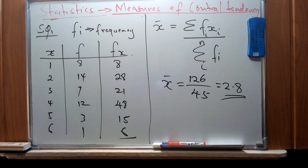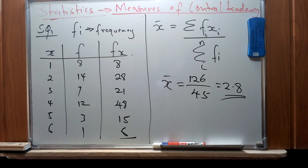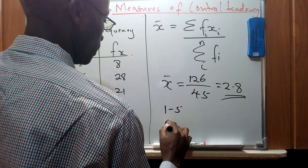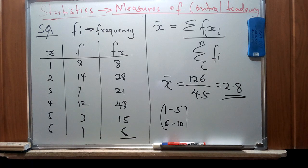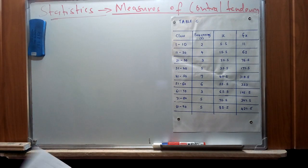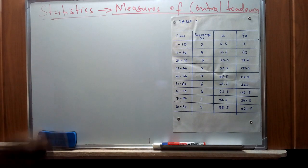For grouped data — where x appears not as a single value but as a class or range such as 1 to 5, or 6 to 10 — we are going to introduce a new concept known as a midpoint. We use this midpoint in order to find the mean from such a range of grouped data. I'll use a table for illustration.